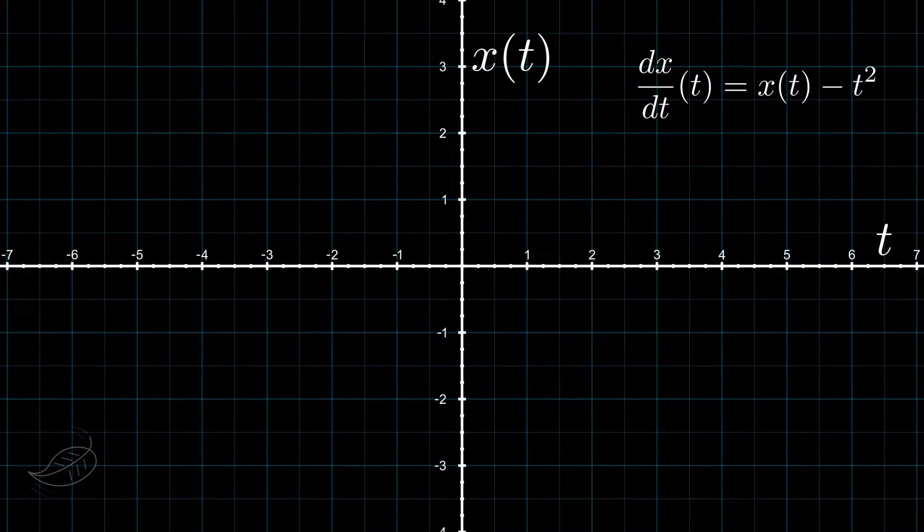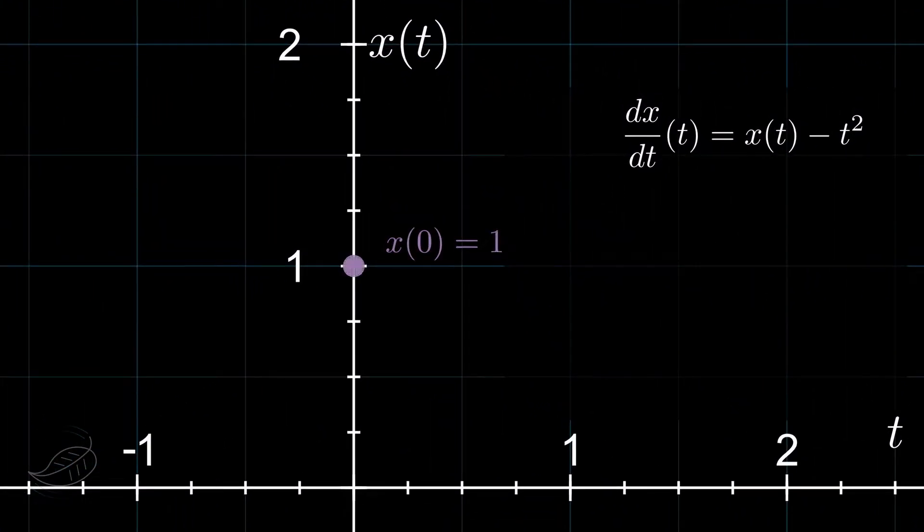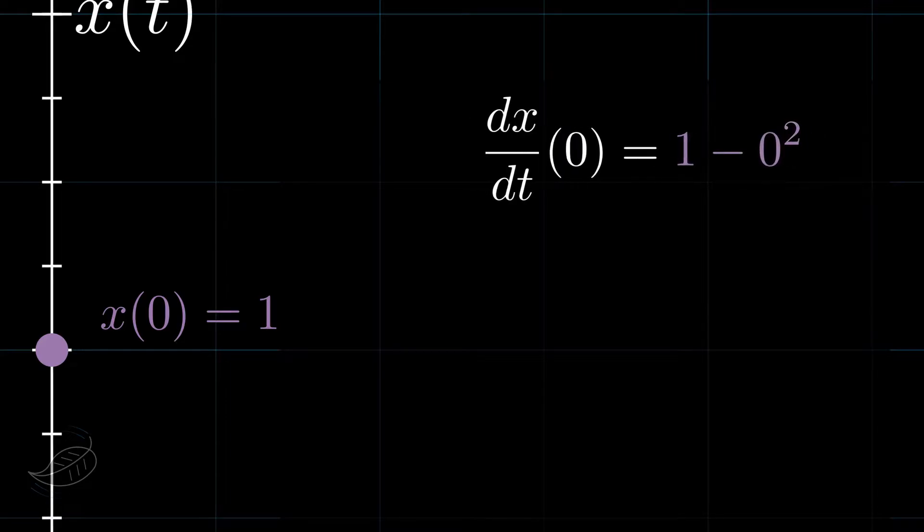We need to set an initial condition, so let's make x of 0 equals 1. With the original equation, we can get the slope at that point.